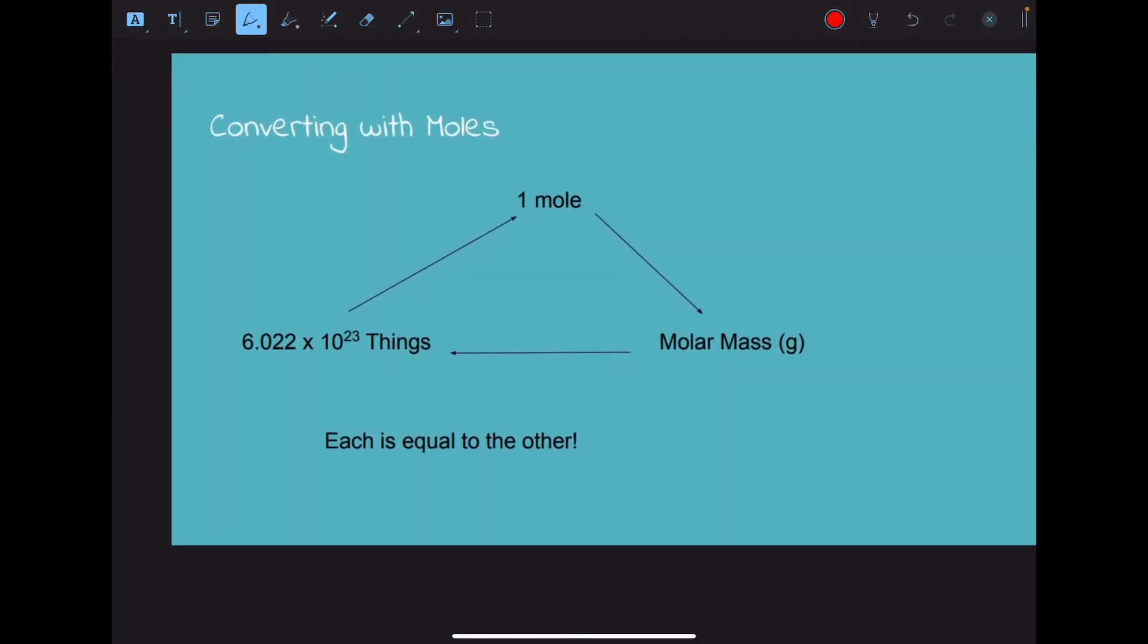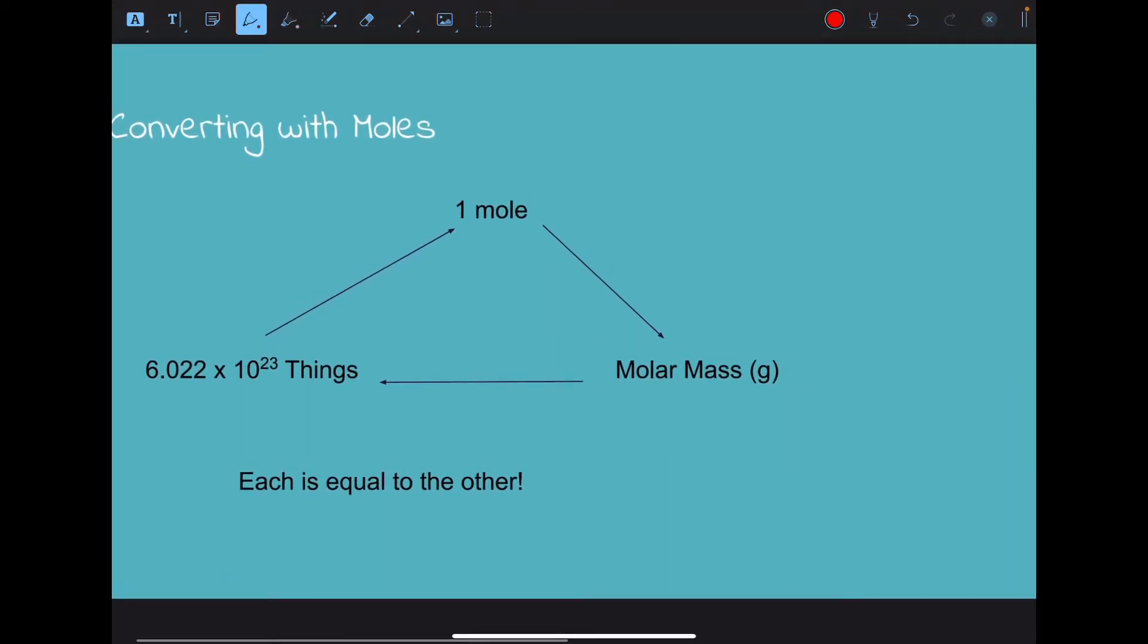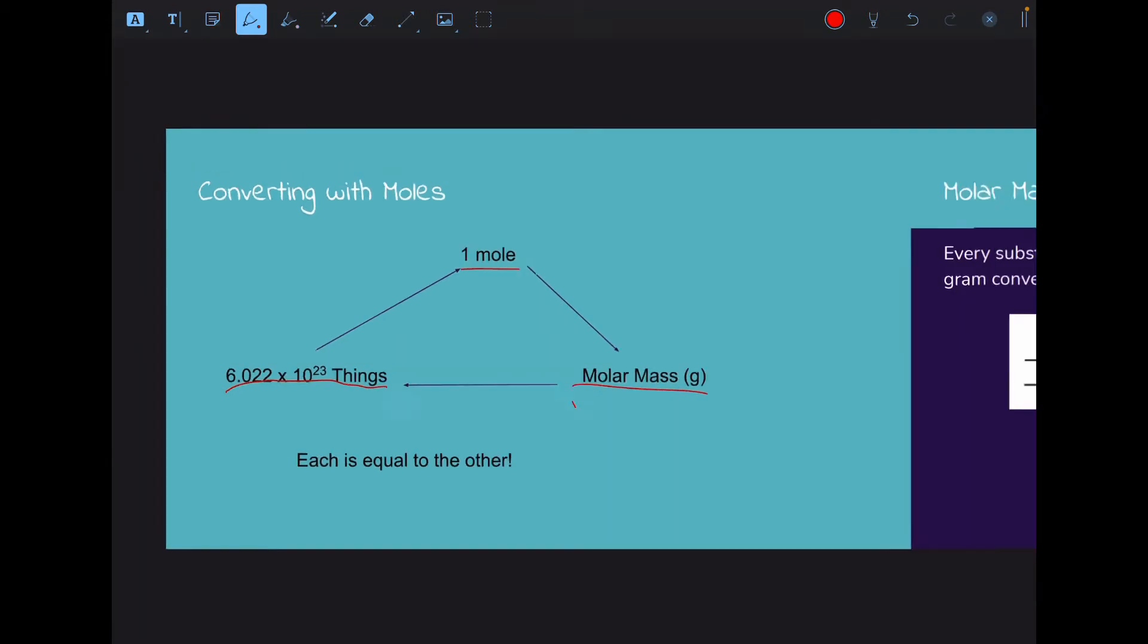You can also convert with molar mass. Once you've found the molar mass of a compound, you can use that to determine that 6.022 times 10 to the 23rd things is the same as a mole is the same as the molar mass. This is all equal to each other, so we can use them to convert.